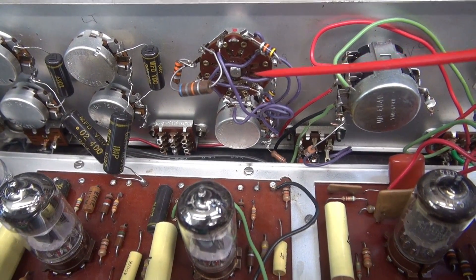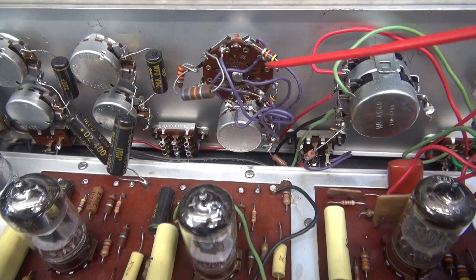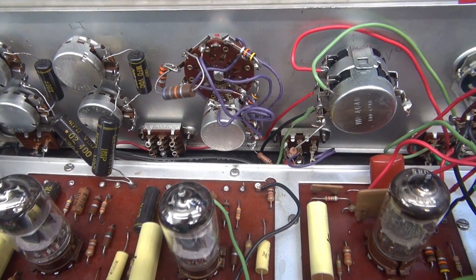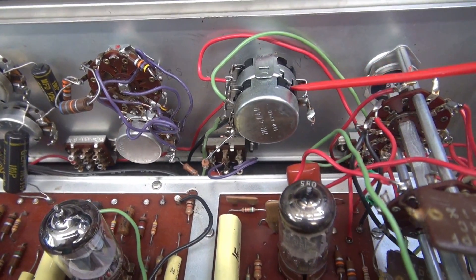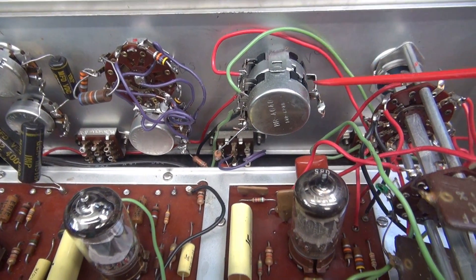Then we've got something going on with this switch here. See this wire? It's not going to anything, and it appears as though somebody's been playing around maybe with the resistor values. I need to take a look at that. Here's the volume control. That is also not original. It's been replaced. Hopefully it's the right value.